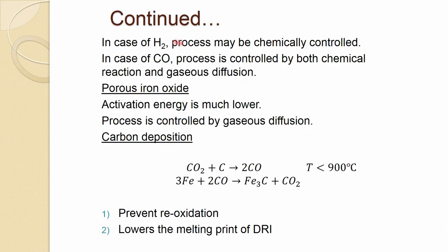In the case of pure hydrogen, the process is usually chemically controlled. In the case of CO, it is both chemical and diffusion controlled — it could even be a combination depending on the situation. For porous iron oxide, the activation energy is much lower and the process is controlled mostly by gaseous diffusion if the iron oxide is very porous.